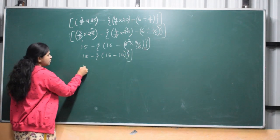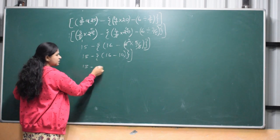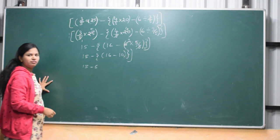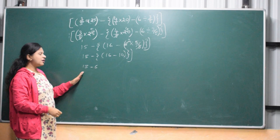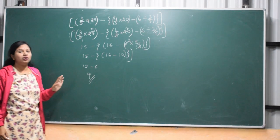It is very simple. 15 minus, 16 minus 10 is 2, 16 minus 10 is 6. So 15 minus 6 is 8... 15 minus 6 is 9. 9 is the answer. Simple and simple.